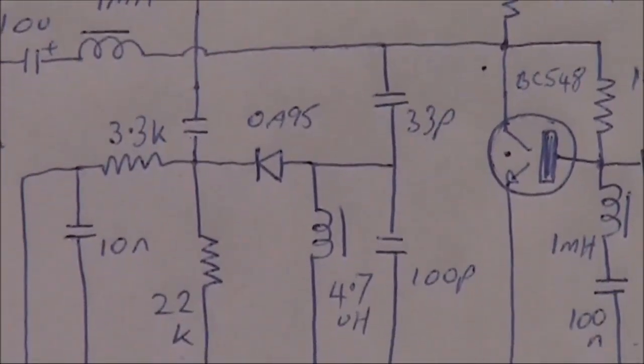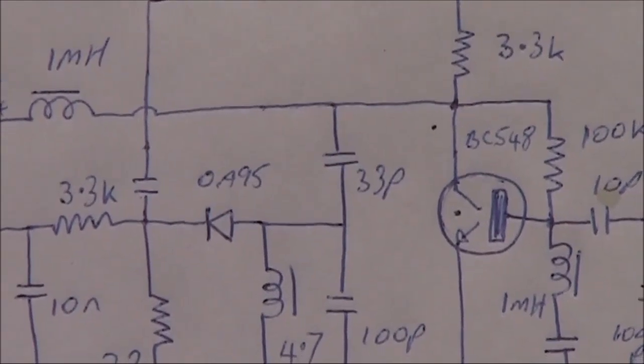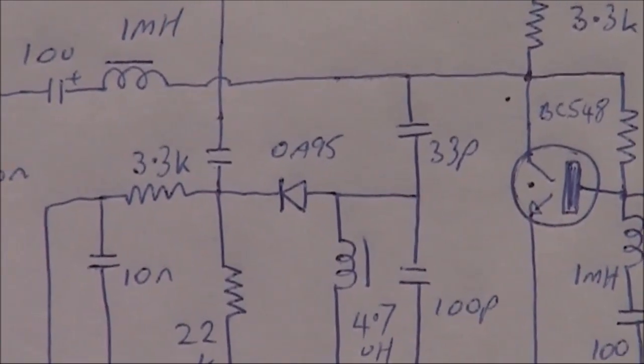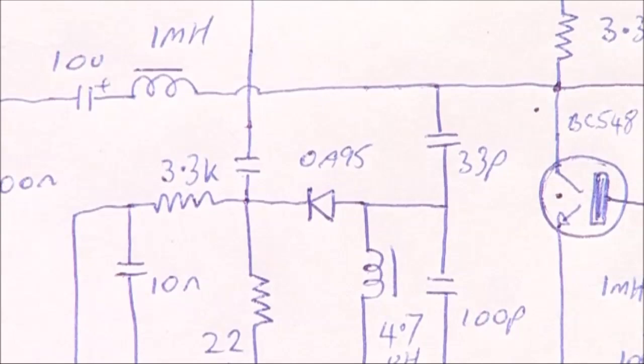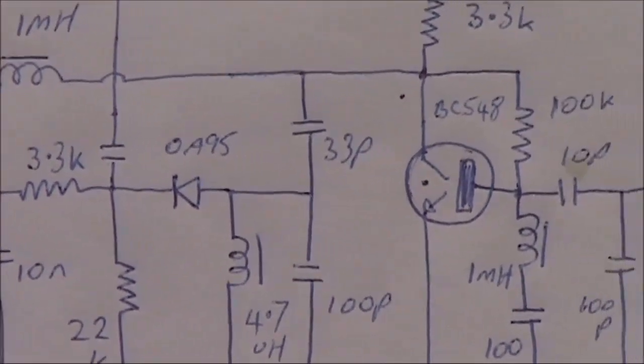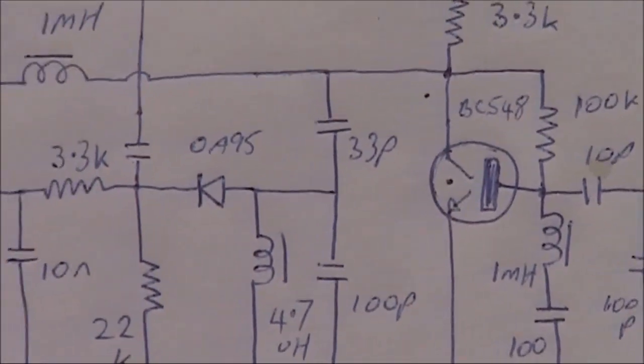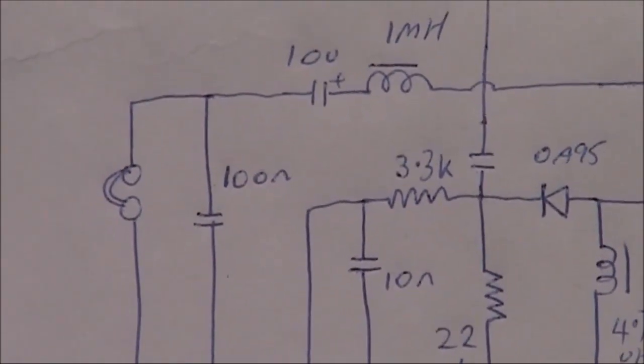Where you've got the signal coming from the transmitter, which is a low-level signal at 7 MHz, mixing with the incoming signal. And the difference in frequency, and there is a small difference, is in audio, which is then amplified via the transistor, and fed to your headphones.